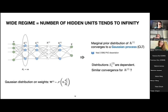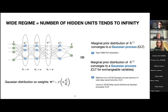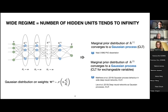The connection is: if we have an infinite number of hidden units in a layer, then a neural network tends to a Gaussian process — under the assumption that priors on the weights are Gaussian, zero-mean, with variance scaled by the number of hidden units. In 2018, two papers showed that this holds even going deeper: with infinite hidden units per layer across multiple layers, the network still converges to a Gaussian process, and the second paper showed how to obtain the corresponding kernel.